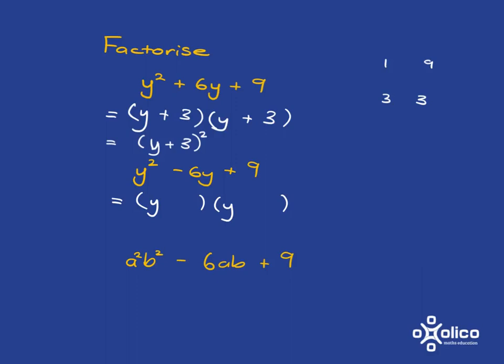You know it's either got to be a positive times a positive or a negative times a negative. And in this case, because you're going to end up with negative 6, you know it's got to be a negative times a negative. And you know that it's going to be 3 and 3. And so this one is y minus 3 squared. So the change from the plus 6 to the minus 6y is just that it's here y minus 3 instead of y plus 3.